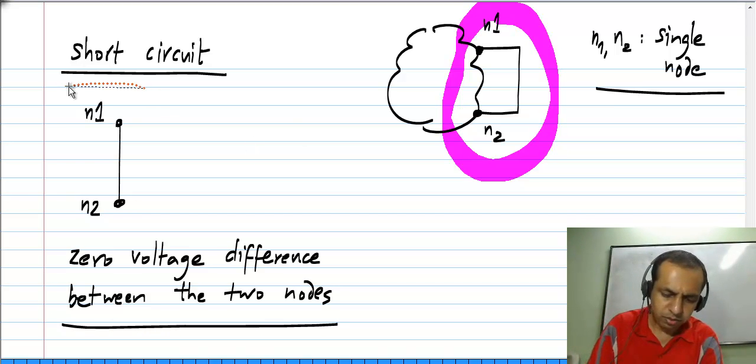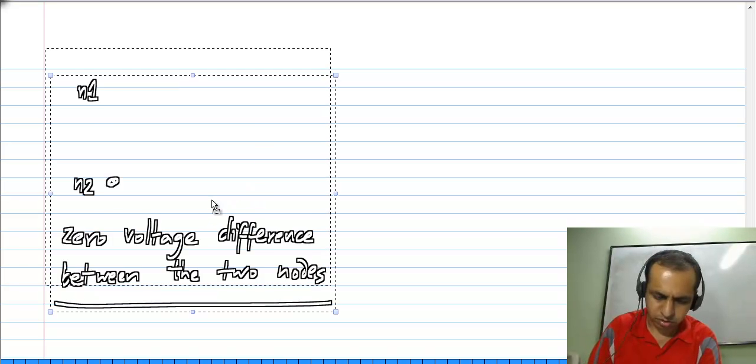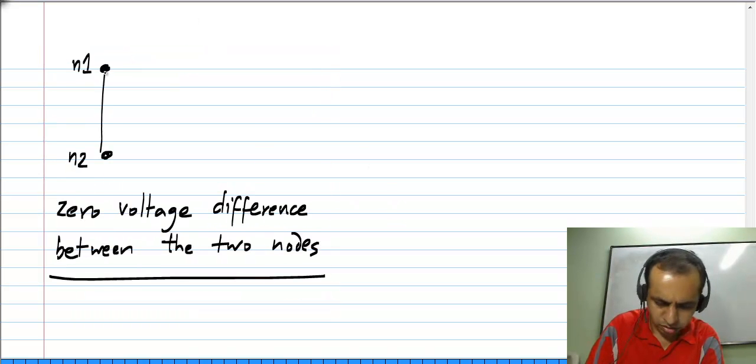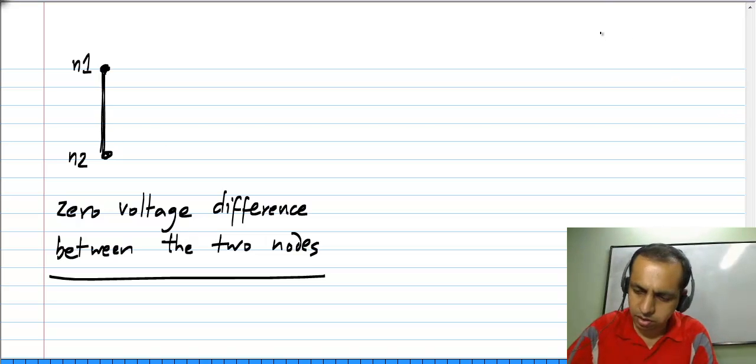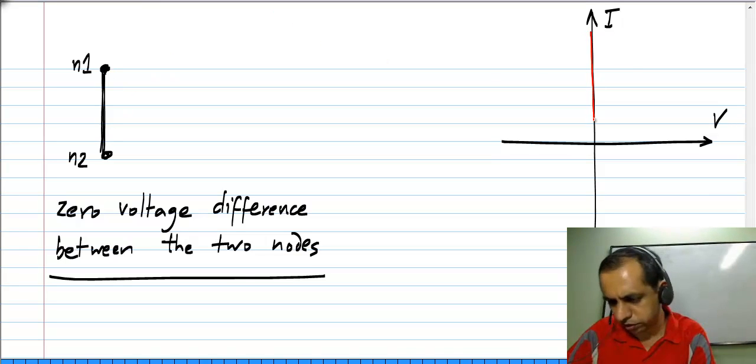Zero voltage between these two nodes. If I go and draw the I-V characteristic of this, obviously, the voltage is always zero, and any current can flow through the short circuit, or this wire. The characteristic looks like this, it is a vertical line passing through the origin.